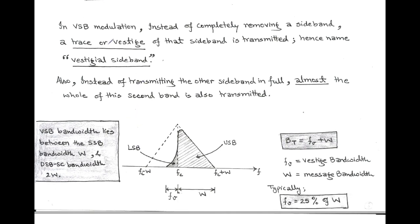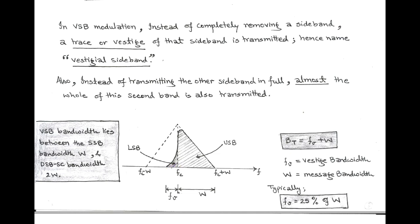In VSB modulation, instead of removing one of the sidebands completely, the trace or vestige of that sideband is transmitted. As shown in the figure, our interest is to remove the lower sideband, so we take the trace or vestige of the lower sideband as part of the transmitted signal. Therefore, this modulation is called vestigial sideband modulation.